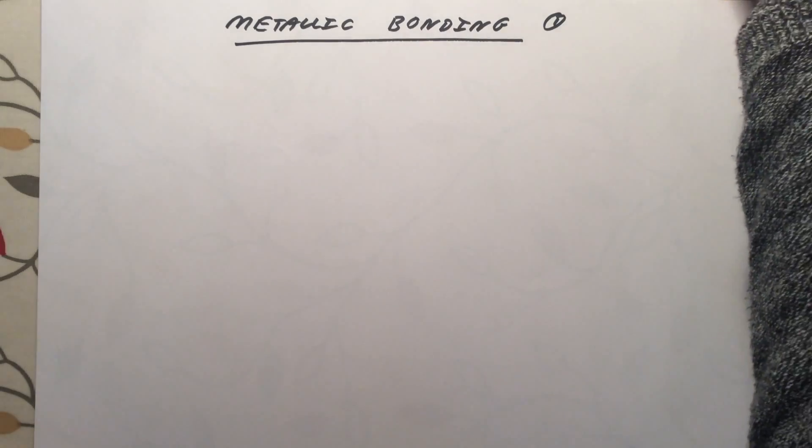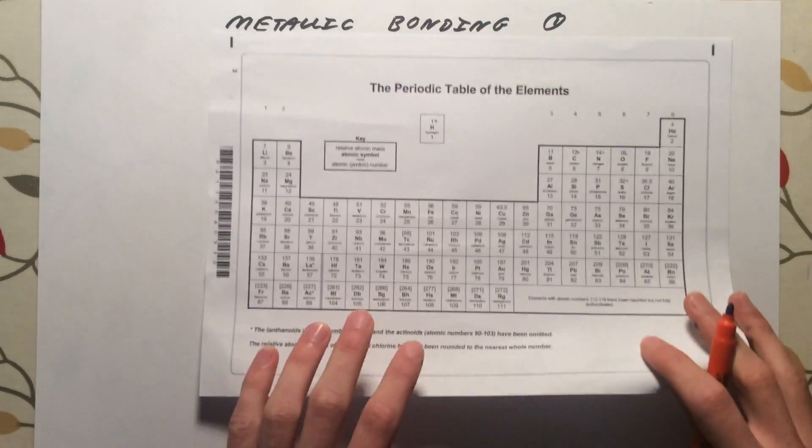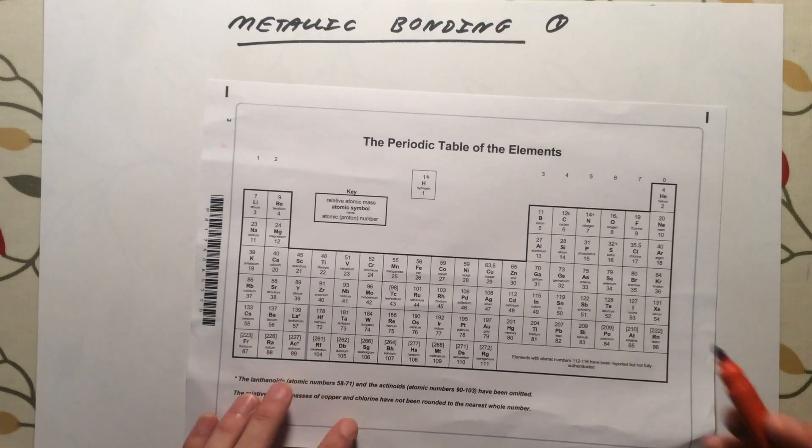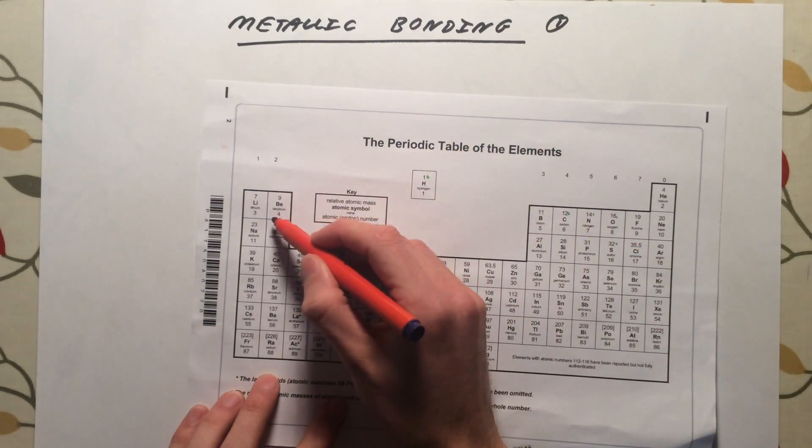So before we actually look at the bonding itself, let's remind ourselves about why metals actually want to do this. Why do they want to bond in the first place? Let us look at magnesium.